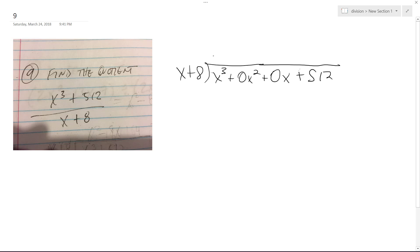So what we have here is how many times does x go into x cubed? It's x squared times, so we get x squared. X squared times x plus 8, so we get x cubed plus 8x squared. Switch the signs, this becomes minus 8x squared.